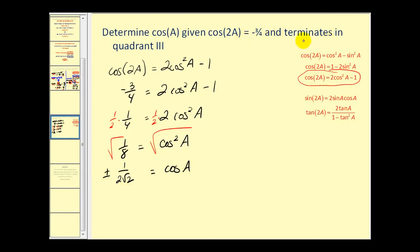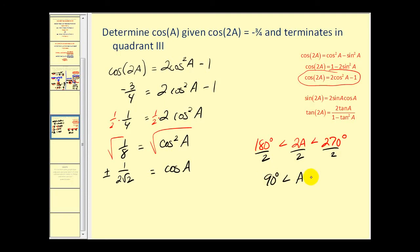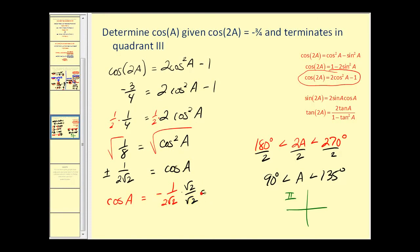Going back to the problem, angle two A terminates in the third quadrant, meaning it is between 180 and 270 degrees. Dividing by two, angle A is between 90 and 135 degrees, placing angle A in the second quadrant. In the second quadrant the x-coordinate is negative, so the cosine value is negative. Therefore cosine A equals negative one over two square root two. Rationalizing, this gives negative square root two over four. So cosine of angle A equals negative square root two divided by four.